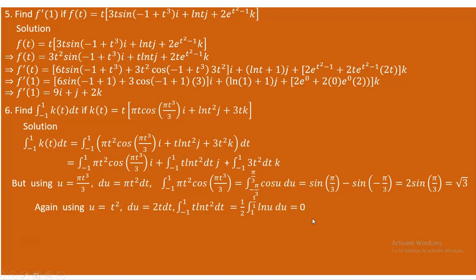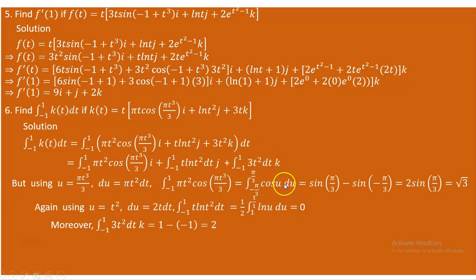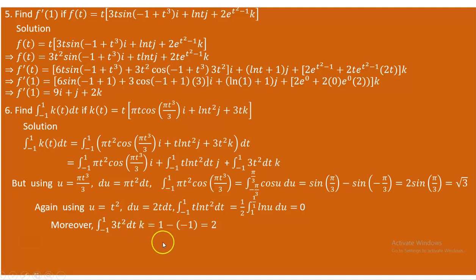For the last component: the integral from −1 to 1 of 3t² dt, whose antiderivative is t³. When t = 1, t³ = 1; when t = −1, t³ = −1. So 1 − (−1) = 2. The z component integral gives 2.